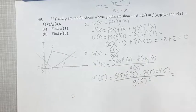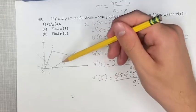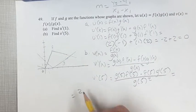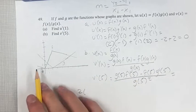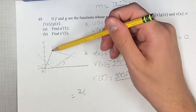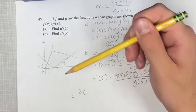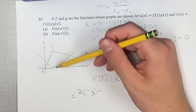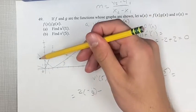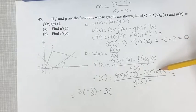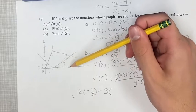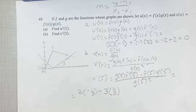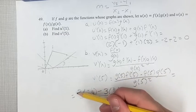Reading values from the graph: g of 5 equals 2. The slope of f at 5, going down 1 and 3 to the right, is negative 1 over 3. The value of f at 5 is 3. The derivative of g at 5, going 3 to the right and 2 up, is 2 over 3. And g of 5 squared is 4.